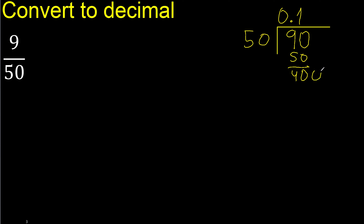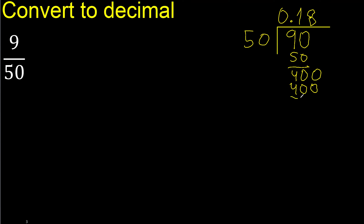Always complete with 0 point only once: 400. Multiply 50 by which number? Multiply by 9 is greater. Multiply by 8 is exact: 400. Subtract: 0. Therefore finish.